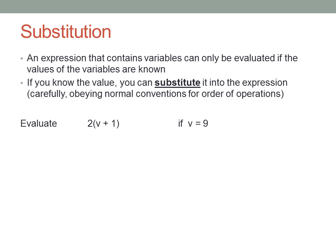Evaluate 2(v + 1) if v equals nine. So, substitute the value of nine where the v is. Now evaluate. Brackets first. Nine plus one equals ten, and there's an implied multiplication between the two and the brackets. Two times ten is twenty.